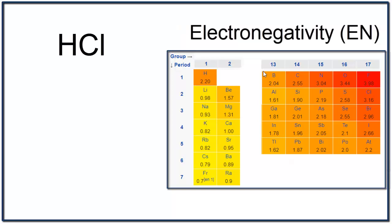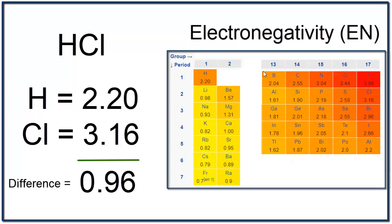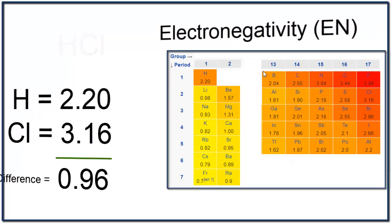Let's try HCl, hydrochloric acid. Hydrogen has a value of 2.20 and chlorine has a value of 3.16. The difference between these, 2.20 minus 3.16, gives us 0.96. That's the difference in electronegativity for H and Cl. But what does that number mean?